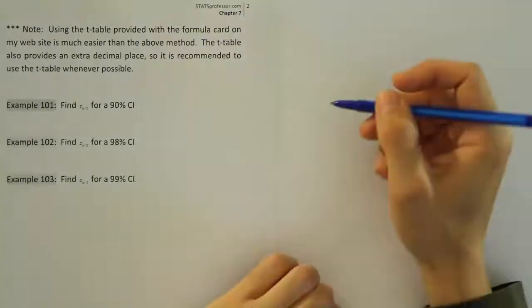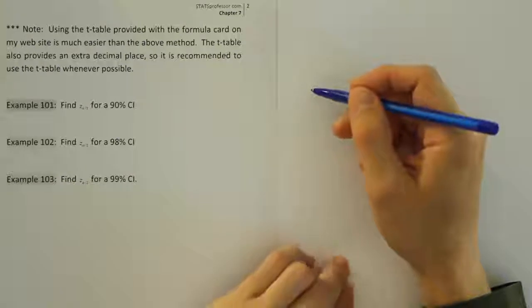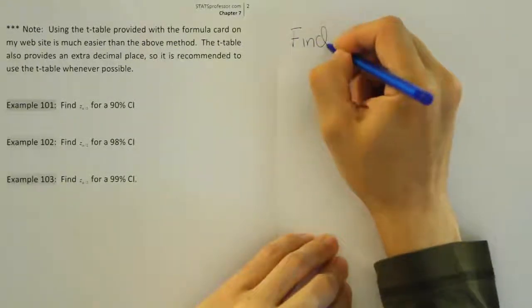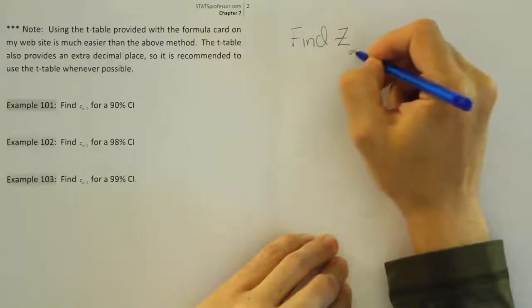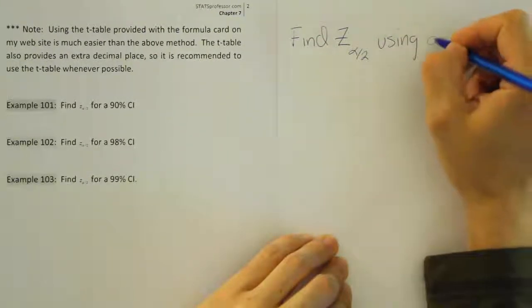All you have to do to use the t-table is to identify alpha divided by 2. So we're trying to find in this problem, we want to find z alpha divided by 2 using a t-table.